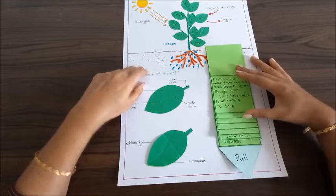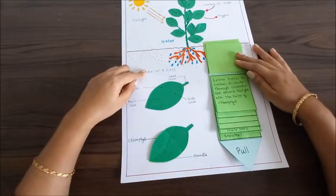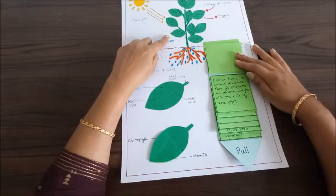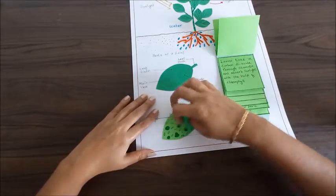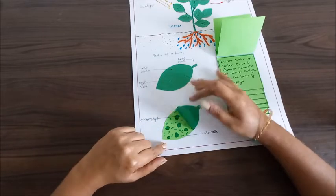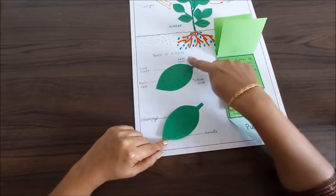Now leaves take in carbon dioxide through stomata and absorb sunlight with the help of chlorophyll. As you can see here, inside the leaf there is chlorophyll. These are the main veins, side veins, and this is the leaf stalk and this is the leaf blade.